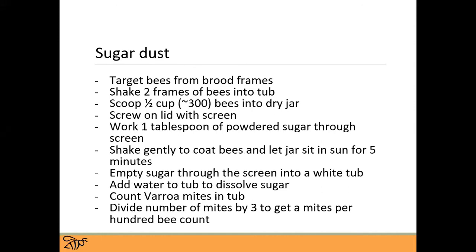The sugar dust is a non-destructive sample, but it can be a more finicky way to monitor. Again you're doing a very similar method where you're targeting those brood frames, shaking two frames into a tub, gathering approximately 300 bees, and then putting them into a jar with a screened lid. You pour one tablespoon of powdered sugar through it, gently shake the jar to coat the bees, and let it sit in the sun for five minutes. The finicky part is that if it's not a really sunny or warm day, it can be a less accurate method. You want to use this method under ideal conditions. Then you empty that sugar through the screen into a tub, dissolve the sugar, and count the mites. Again, you're dividing by three to get mites per 100 bee count.